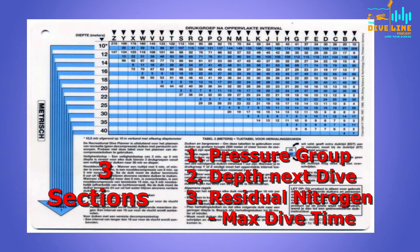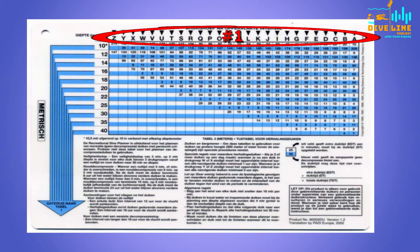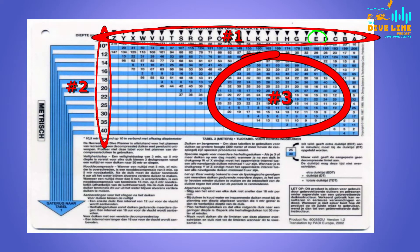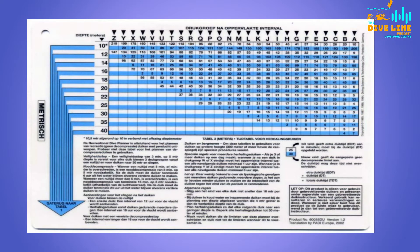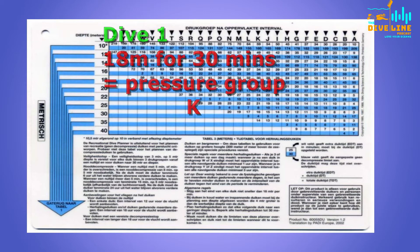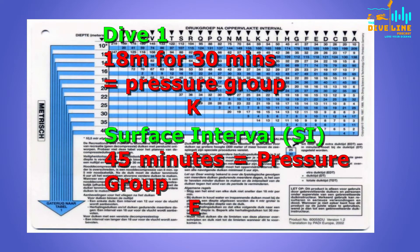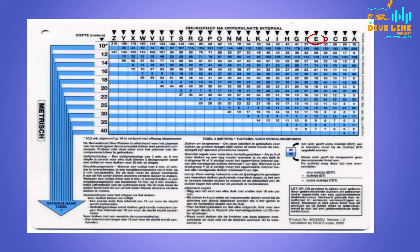On this side of the RDP table, we basically have three sections. At the top, we have pressure group at end of surface interval — and we know ours was E after our first dive. Number two, down the left-hand side, we have our depths, showing how deep you'll be going on your next dive. Then section three shows the residual nitrogen times in the white boxes, and the maximum dive time in the blue box, which should not be exceeded. We finished our first dive on pressure group K, and after a surface interval of 45 minutes, we ended up with pressure group E, so this is where we start our next dive.